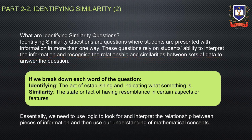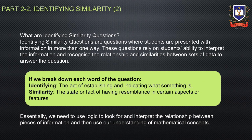If we break down each word of the question category: identifying is the act of establishing and indicating what something is. Similarity is the state or fact of having resemblance in certain aspects or features. Essentially, we need to use logic — a foundational part of problem-solving — to look for and interpret the relationship between pieces of information and then use our understanding of mathematical concepts.